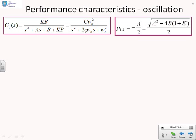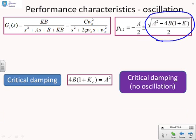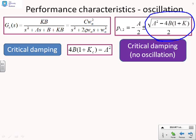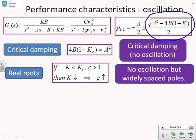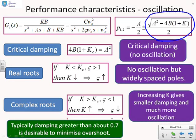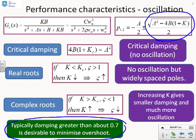Looking at oscillation: when k becomes too large, the part in the square root becomes negative, giving imaginary poles and hence oscillation. At critical damping there is no oscillation. With real roots and small k there is also no oscillation, but the poles are widely spaced. If k is bigger than the critical damping value, the imaginary part of the roots grows larger as k increases — the damping ratio gets smaller, the imaginary part gets bigger, and the oscillation gets worse. Typically, you'll want the damping ratio to be greater than about 0.7, otherwise the oscillation will be unacceptable.